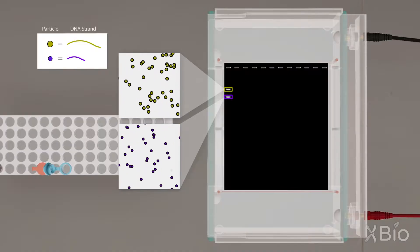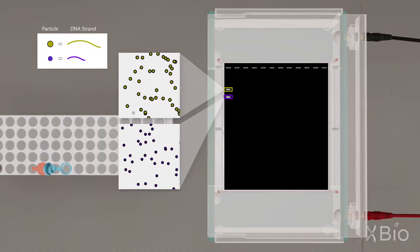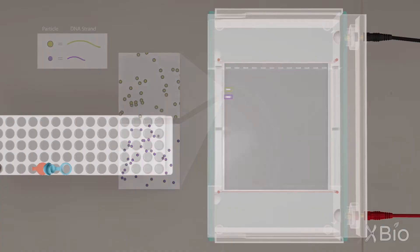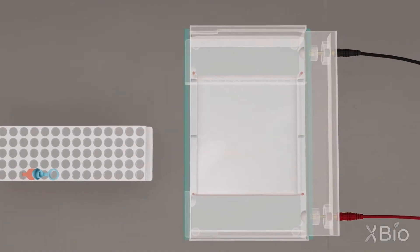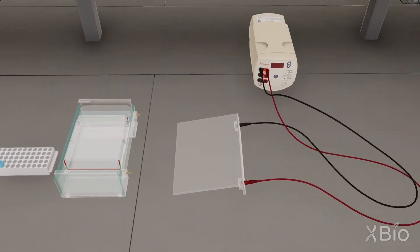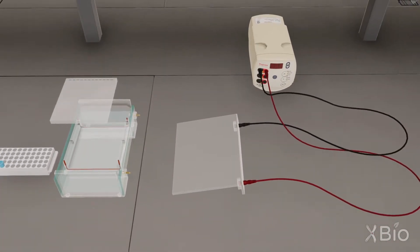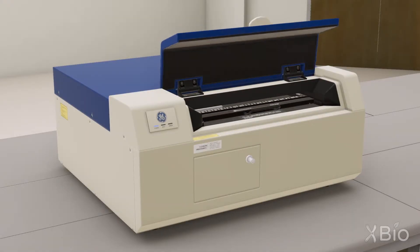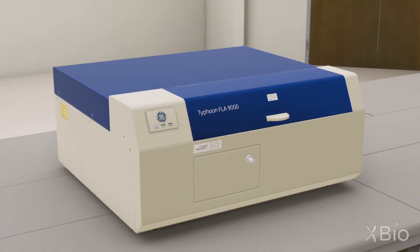Typically, each band is comprised of billions of individual molecules. Once the gel has run for a sufficient amount of time, the next step is typically to scan the gel slab and acquire a digital image.